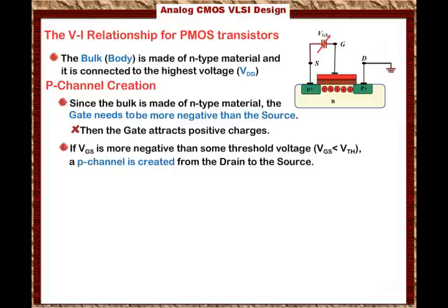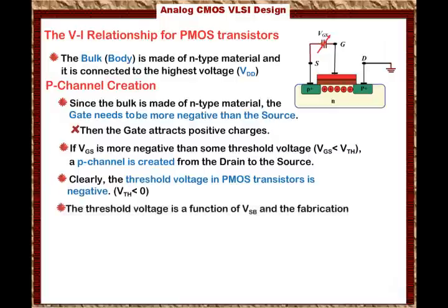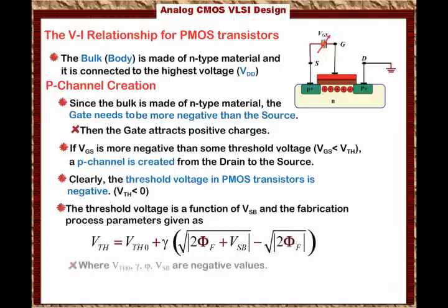VGS has to be more negative than some threshold voltage. The threshold voltage in PMOS transistors is negative, so V_threshold is less than zero. The threshold voltage is a function of V_SB — the voltage between the source and the body — and fabrication process parameters: Vth = Vth0 + γ(√|2φF + VSB| − √|2φF|), where Vth0, γ, φF, and VSB are all negative values.